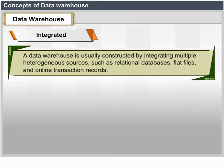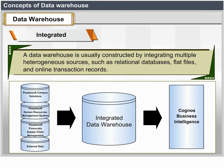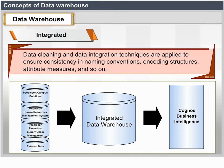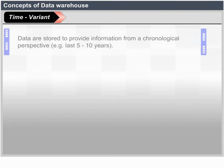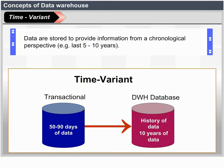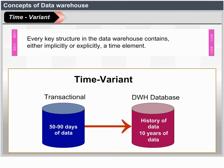Integrated: A data warehouse is usually constructed by integrating multiple heterogeneous sources such as relational databases, flat files and online transaction records. Data cleaning and data integration techniques are applied to ensure consistency in naming conventions, encoding structures, attribute measures and so on. Time-variant: Data are stored to provide information from a historic perspective, e.g., the past five to ten years. Every key structure in the data warehouse contains either implicitly or explicitly a time element.